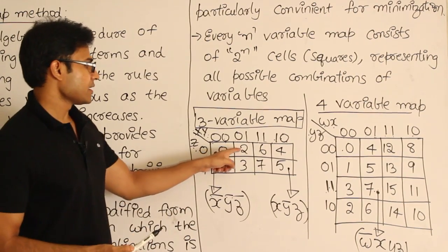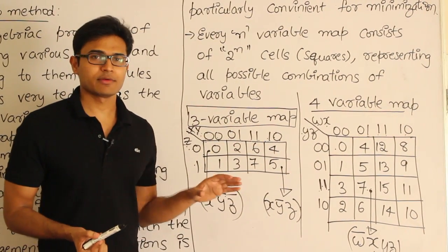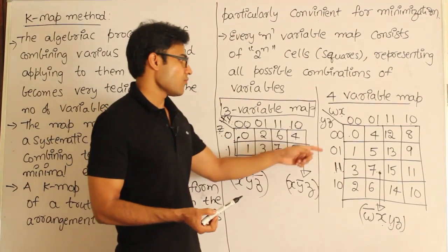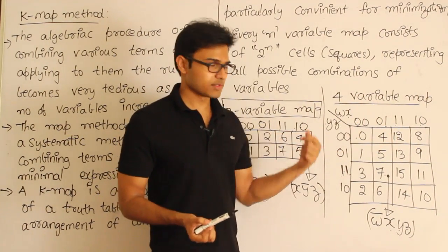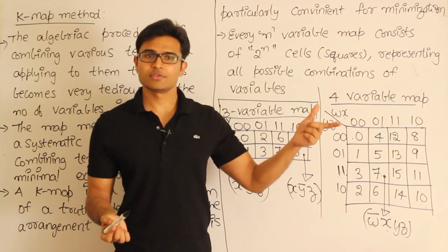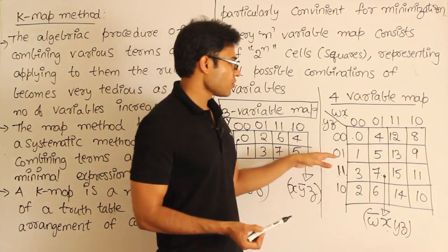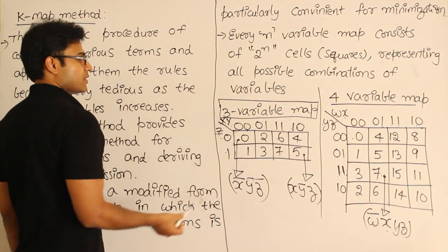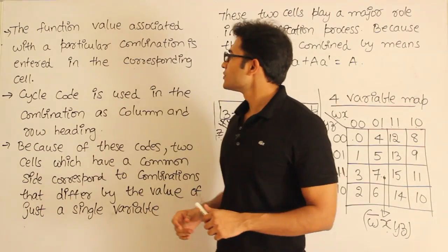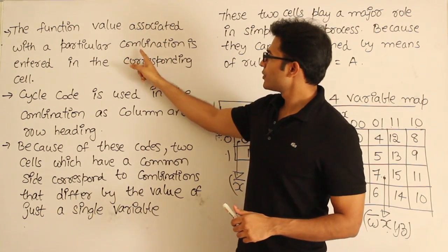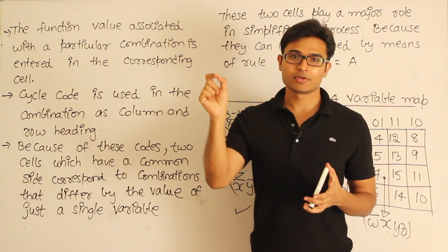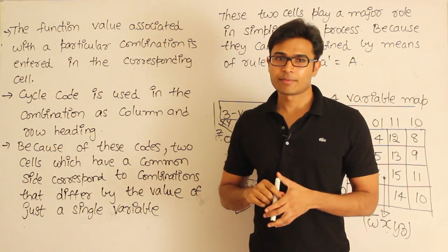The numbers I write inside the cells are just for explanation — don't memorize them. What will actually be present inside these cells are the truth values for each particular min term: what truth value does that function assign to that min term. The function value associated with a particular combination is entered in the corresponding cell. Once we have the K-map, we go to the corresponding cell which represents that particular min term and put the truth value there.